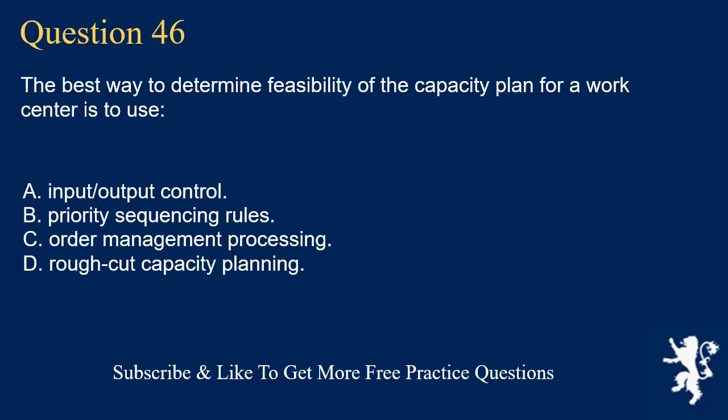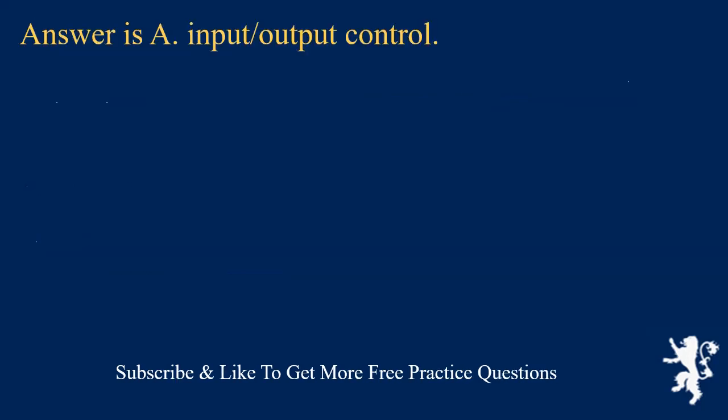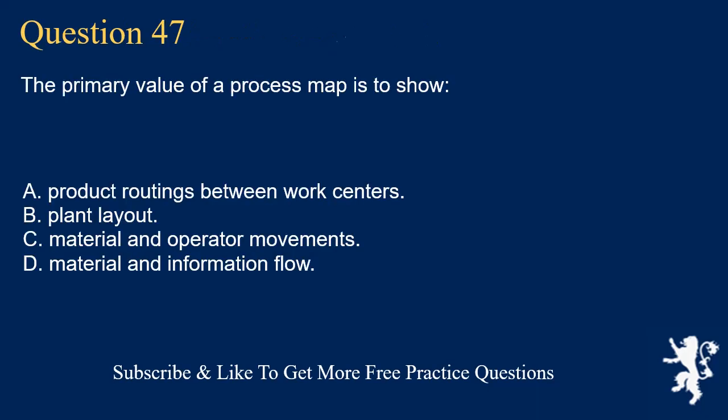Question 46. The best way to determine feasibility of the capacity plan for a work center is to use: A. Input/output control. B. Priority sequencing rules. C. Order management processing. D. Rough cut capacity planning. Answer is A. Input/output control.